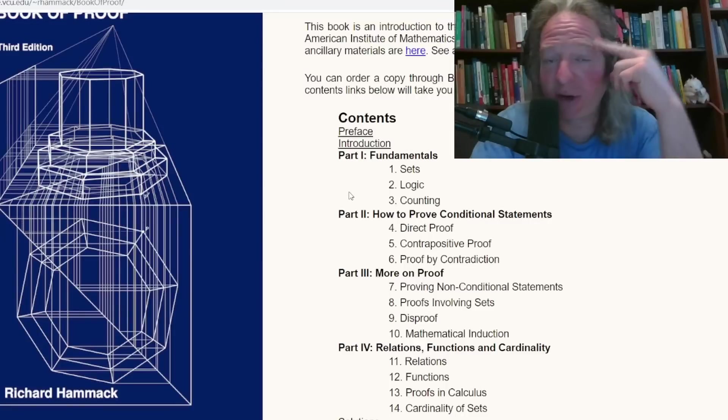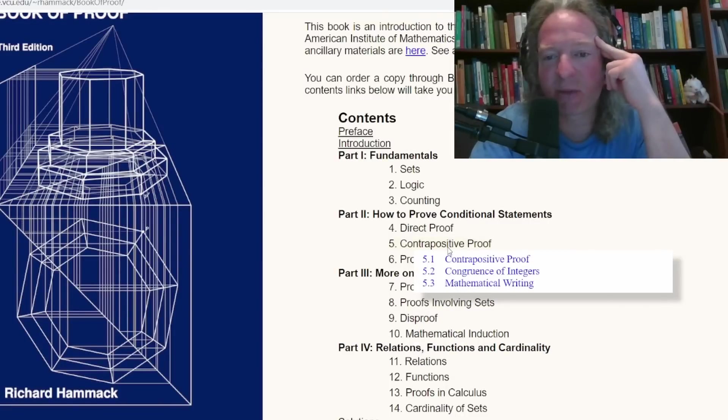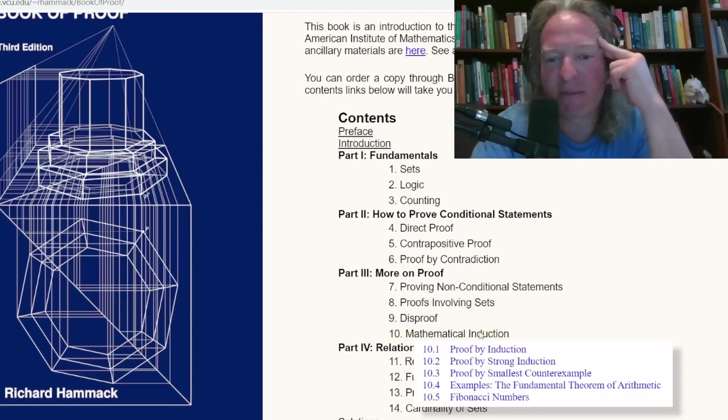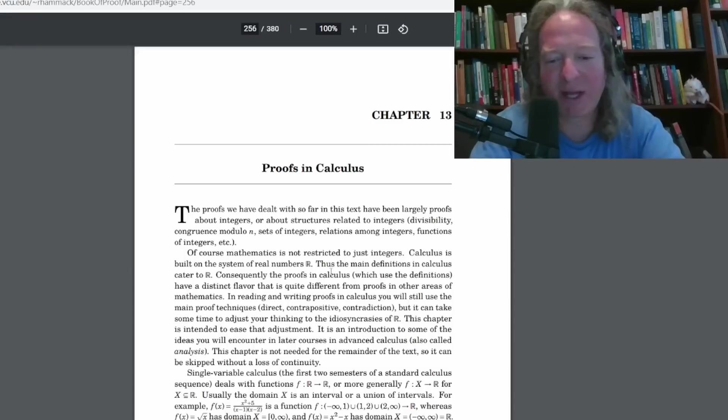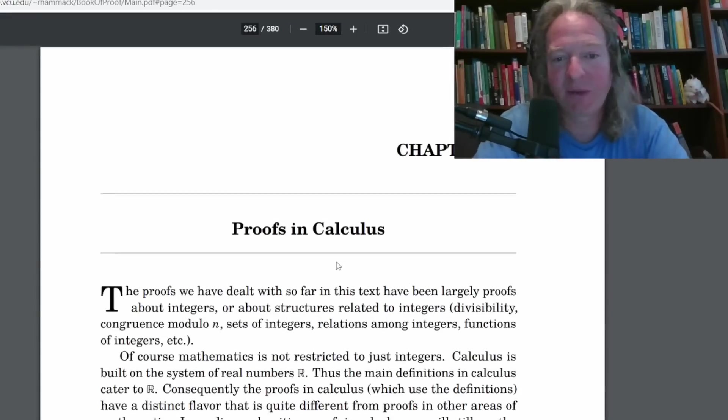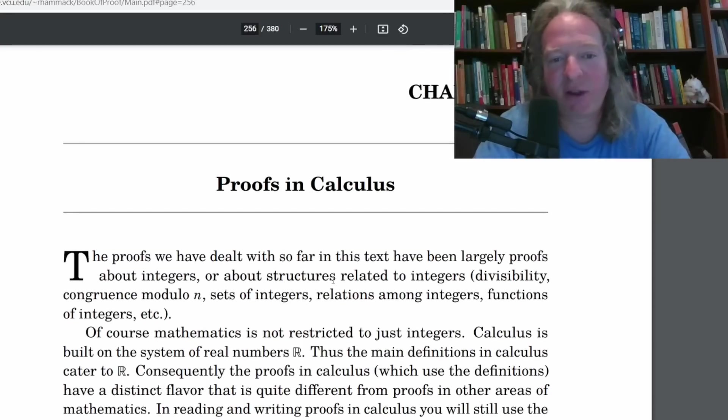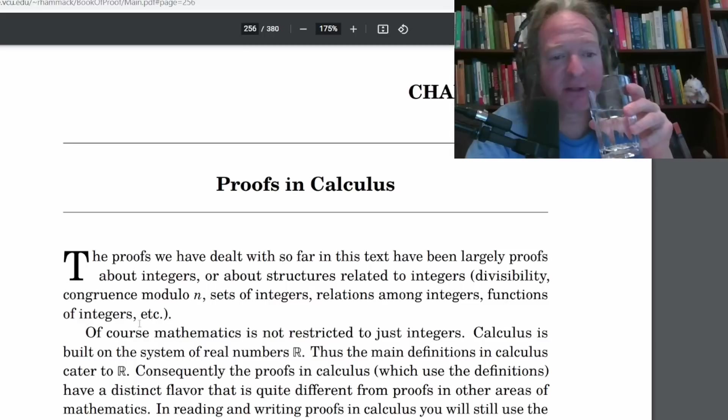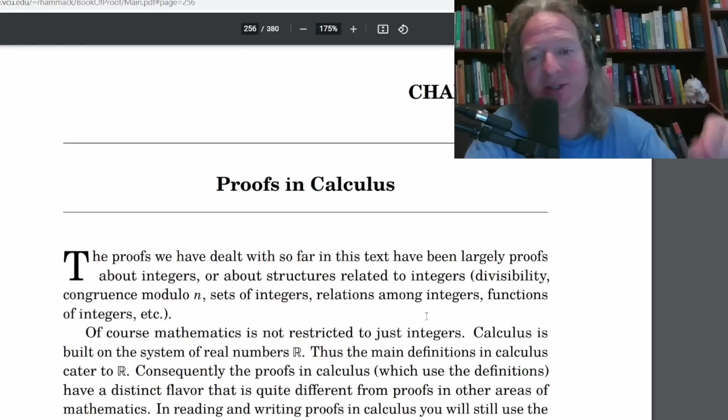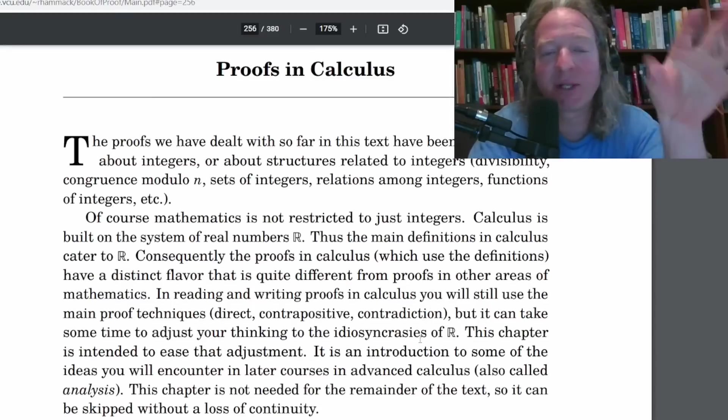Let's jump to a different section. So here he does contrapositive proof, proof by contradiction, disproof, proofs involving sets, proofs in calculus. Let's go to that. This is something I've looked at because I'm pretty sure I've done some calculus proofs from this book. The proofs we have dealt with so far in this text have been largely proofs about integers or about structures related to integers. So divisibility, congruence modulo n, sets of integers, relations among integers, functions of integers.